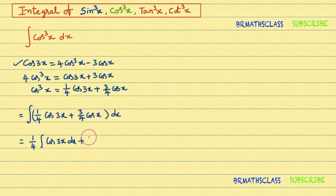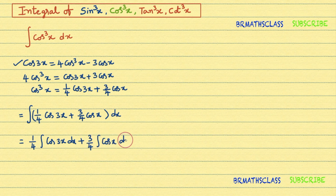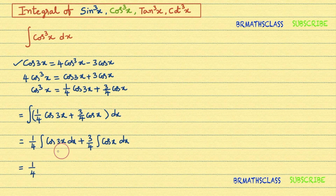As 3/4 is a constant, we can write it outside the integral: (3/4) times the integral of cosx dx. That equals (1/4) times the integral of cos3x dx plus (3/4) times the integral of cosx dx.